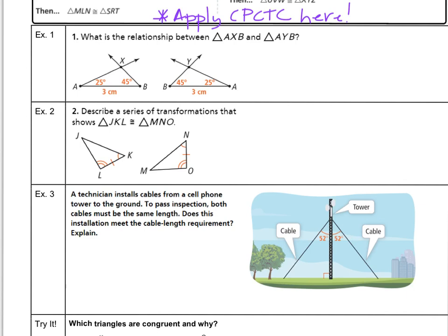Example 1. What is the relationship between triangle AXB and triangle AYB? Taking a look at these figures, notice angle A is 25 in both triangles. Angle B is also the same in both triangles, both 45. And segment AB is equal to segment AB in each triangle. Notice we've got an angle-side-angle configuration. Therefore, the relationship between the two triangles is that they are congruent. Triangle AXB is congruent to triangle AYB by the angle-side-angle congruence theorem.